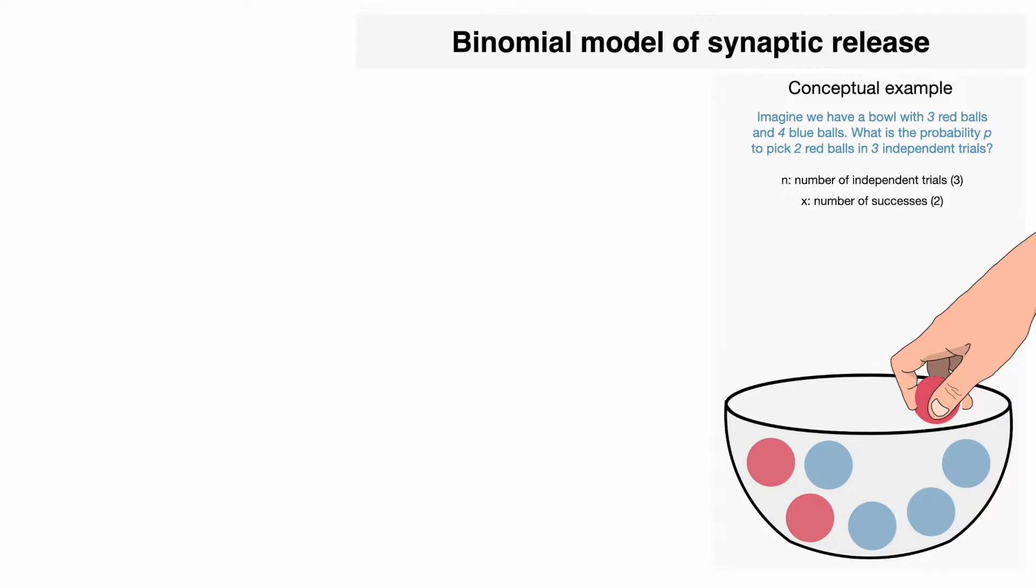and from the context that we have here, we know that out of the seven total balls, there are three red balls, so the probability to pick up a red ball in a given event is three out of seven. This probability is known as the probability of success and it is important that it remains constant. It turns out that we can model our variables and determine the probability of x successes in n independent trials with this equation, which represents the binomial distribution.